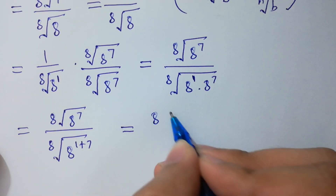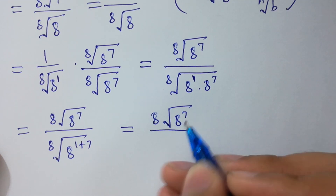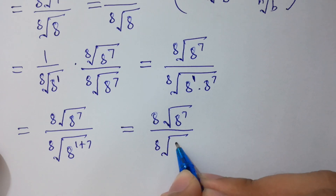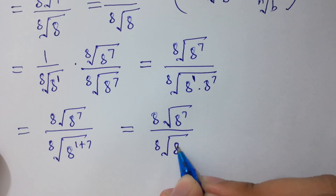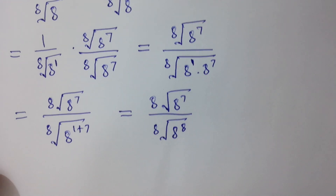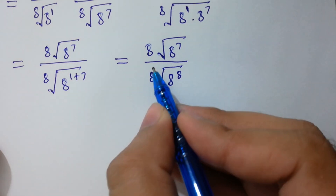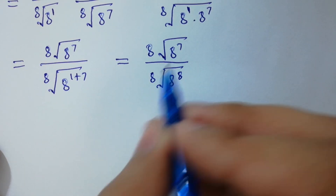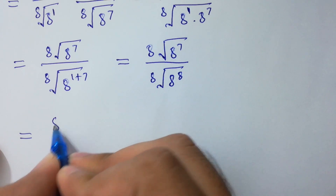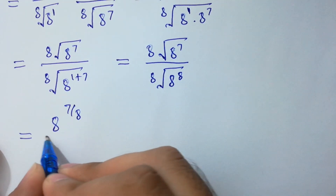So 1 plus 7 equals 8. Now simplify it again. We can write the 8th root of 8 to the power 7 as 8 to the power 7 over 8, and the 8th root of 8 to the power 8 equals 8.